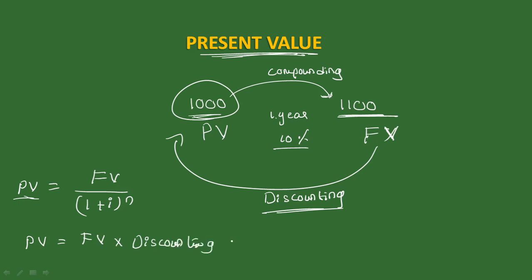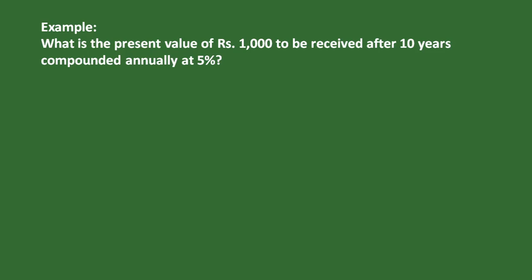You multiply the present value by the discount factor. Find the present value of 1,000 rupees to be received after 10 years, compounded annually at 5%. Find out the present value.